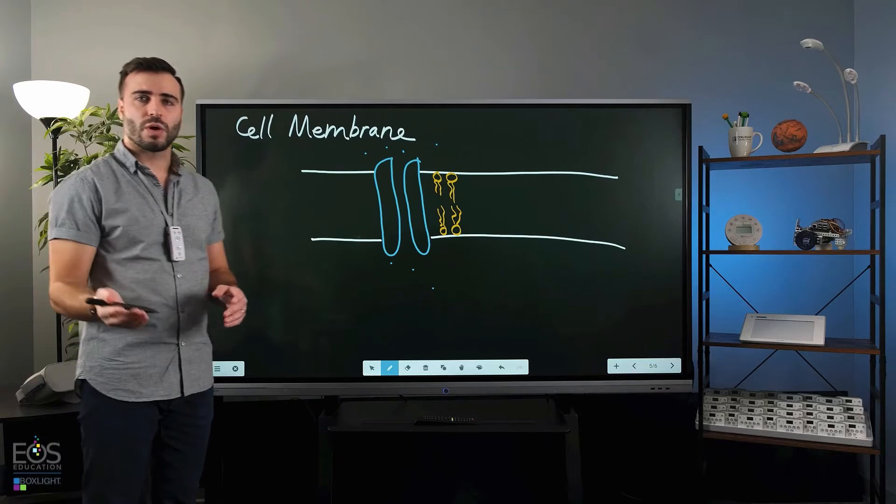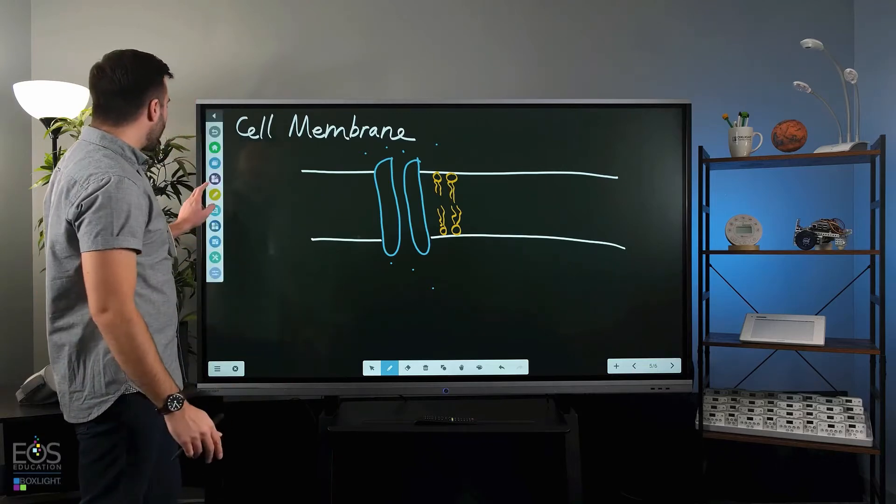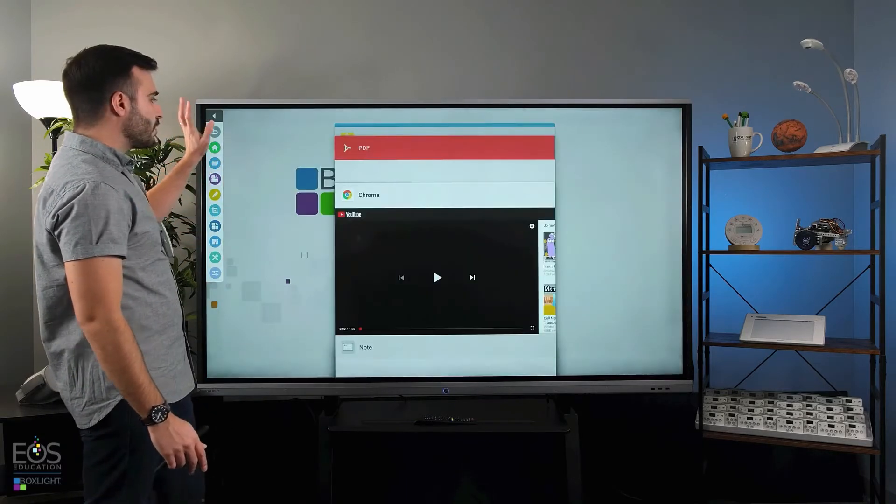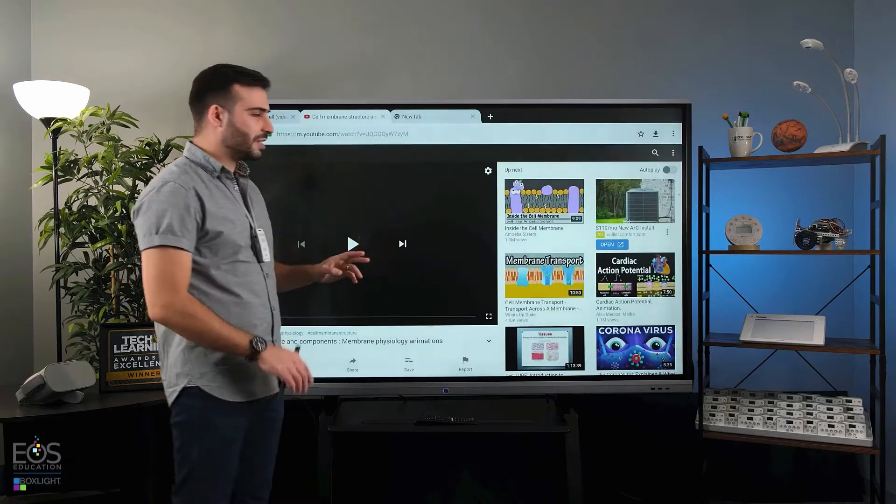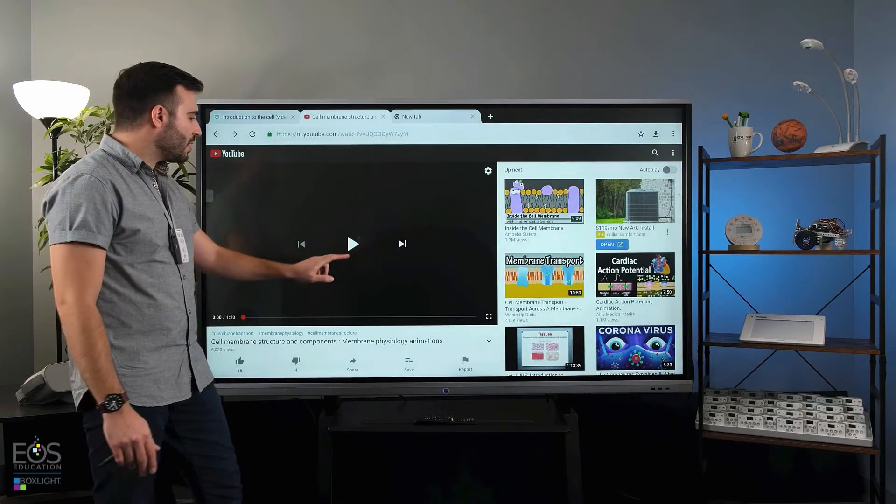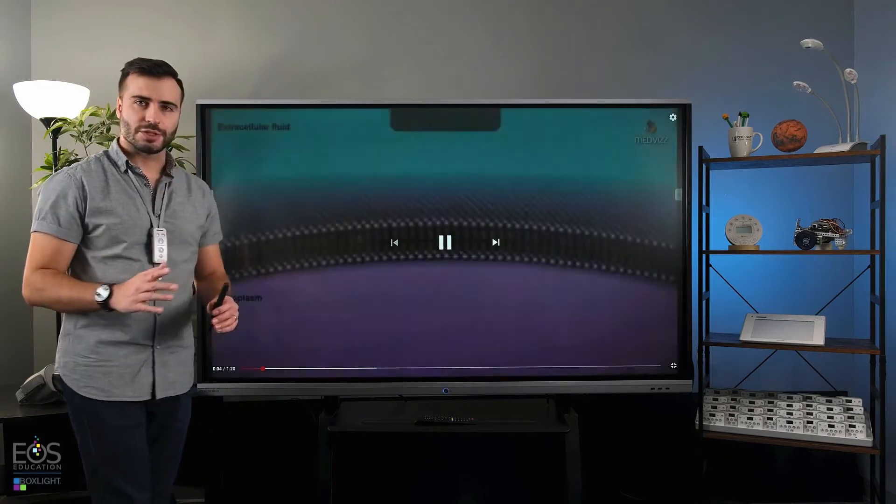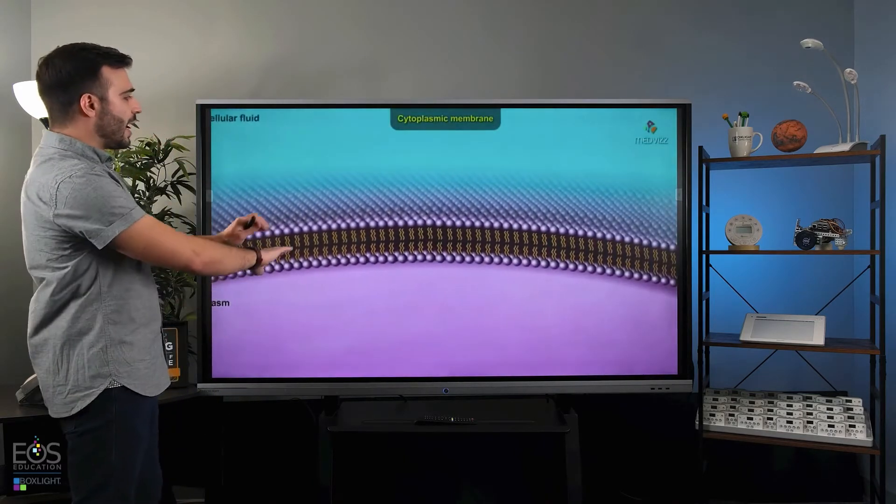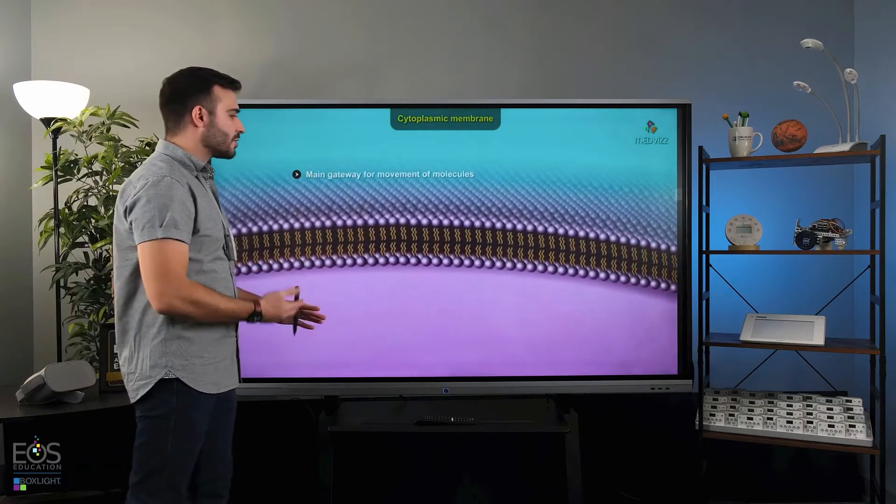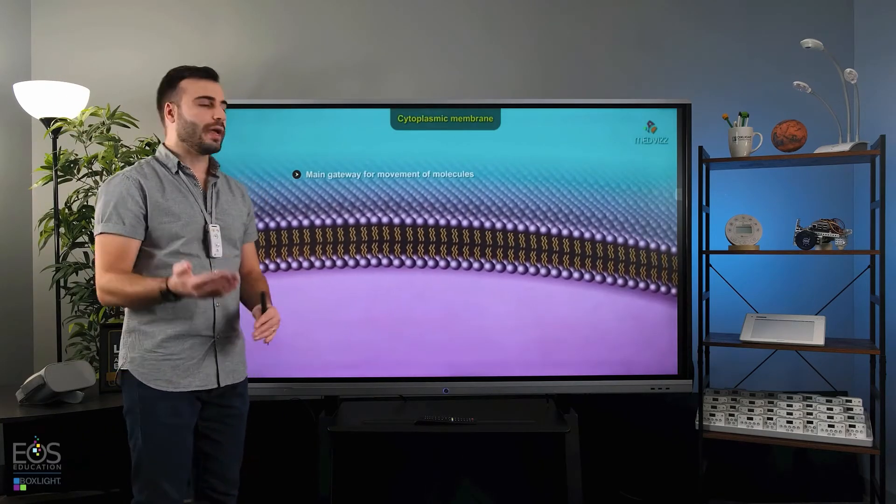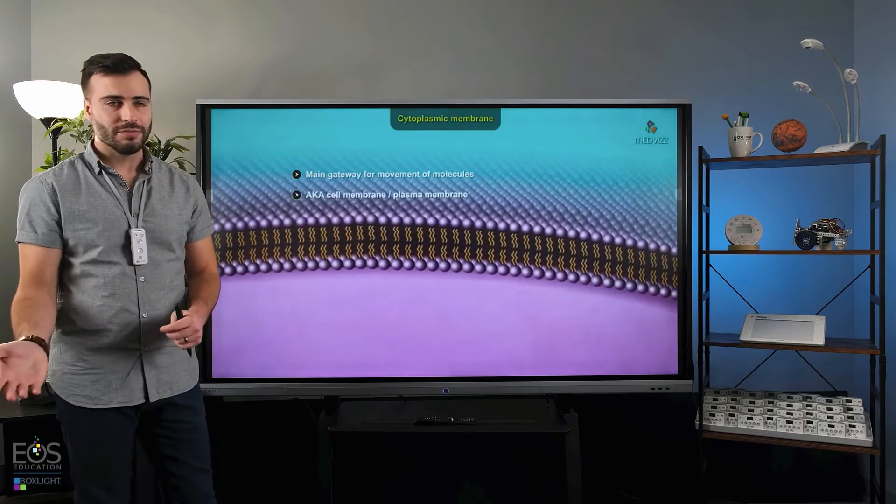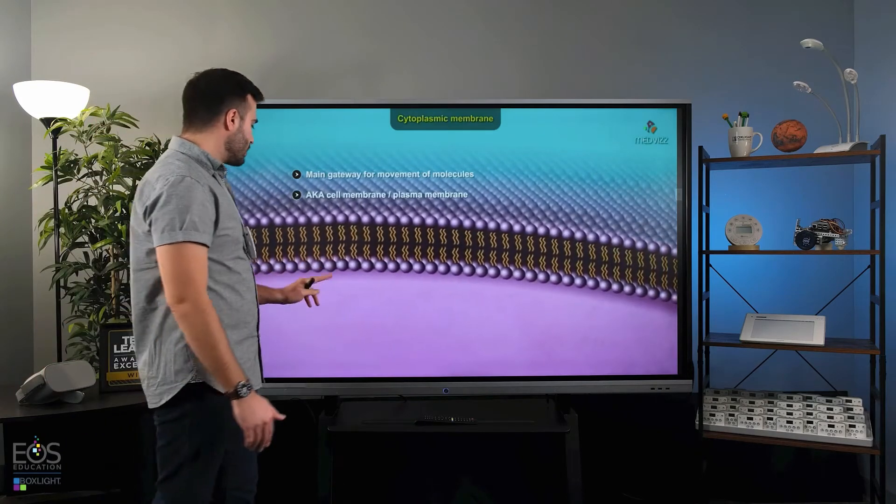Now of course, at some point you're probably going to want to break out and go back to something like Chrome here to show a more detailed overview, maybe an animation. There's plenty that are out there that will give students a great idea of what things actually look like—maybe the scale of these lipid bilayers—more detail and effort than you could draw yourself. So that's of course an option as well.